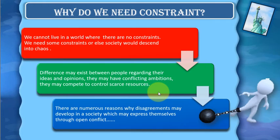We need some constraints, otherwise society would descend into chaos. Differences may exist between people regarding their ideas and opinions; they may have conflicting ambitions and compete to control scarce resources.